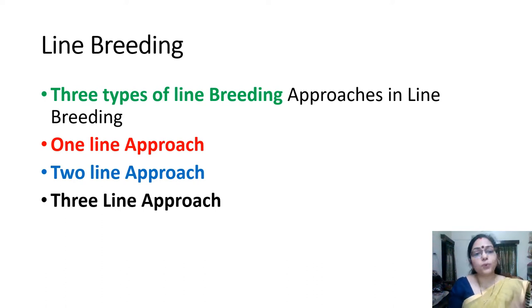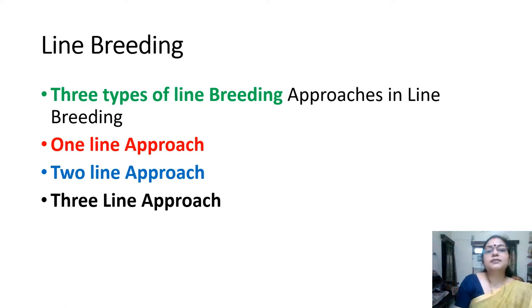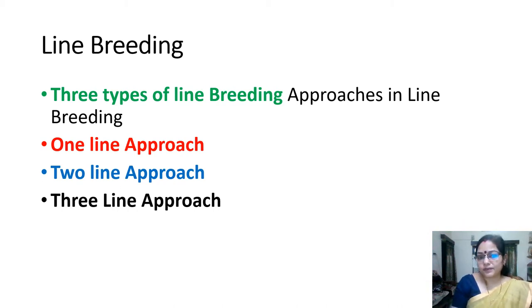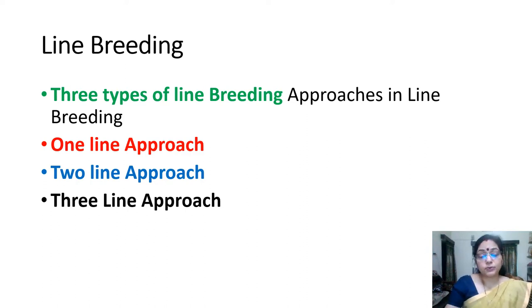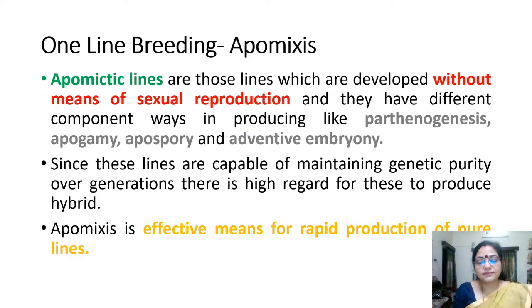Line breeding is of three types. Number one is the one-line approach, number two is the two-line approach, and number three is the three-line approach.